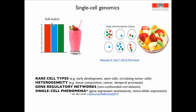What is single-cell analysis trying to do? We're trying to identify rare cell types — from early development to stem cells or circulating tumor cells in the blood as a diagnostic tool. We'd like to examine heterogeneity and tissue composition in cancer. We'd also like to understand temporal processes of differentiation, and gene regulatory networks can be better inferred using single-cell analysis because you're dealing with non-confounded correlations. Finally, there are interesting single-cell phenomena such as gene expression stochasticity or monoallelic expression.